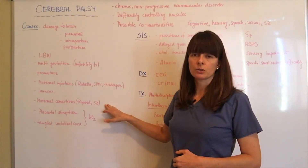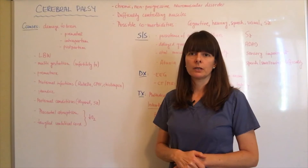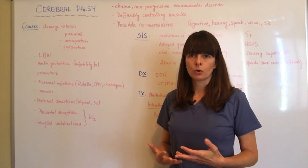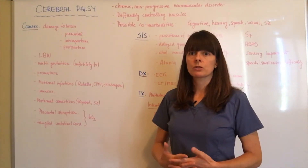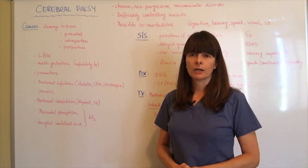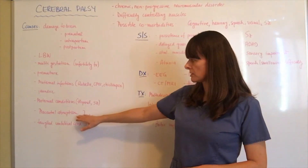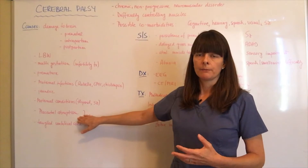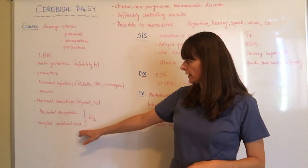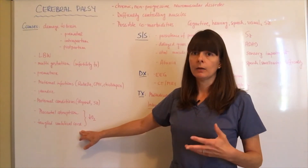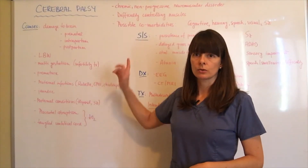Certain maternal conditions are also linked to cerebral palsy, which would be thyroid disorders or seizures — which can cause some hypoxia in the infant — and then abnormal brain development. In the intrapartum period, if there's a placental abruption where the placenta detaches from the uterus causing bleeding, that's usually a medical emergency requiring emergent delivery. Or if the umbilical cord is tangled or maybe around the baby's neck, that will lead to fetal hypoxia, which is also related to the development of cerebral palsy.